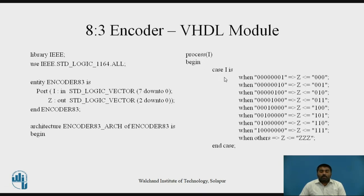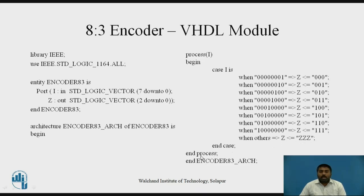The sensitivity list is the list of signals that affect the output. Here only 'i' affects the output, so 'i' is listed. Then process begins. We use a case statement: 'case i is'. When i has a particular value, z takes the corresponding value per the truth table. When the second bit is 1, z is 001. This continues for all combinations. When 'others' — any unspecified input — the output is 'ZZZ' (high impedance). Once all cases are written, you end the case, end the process, and end the architecture.